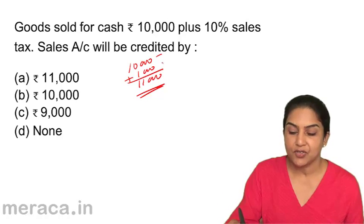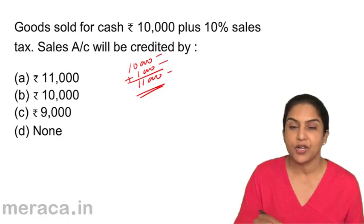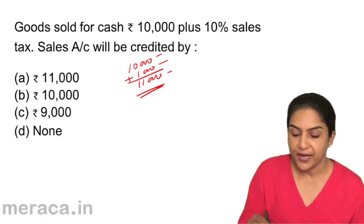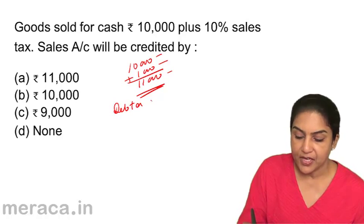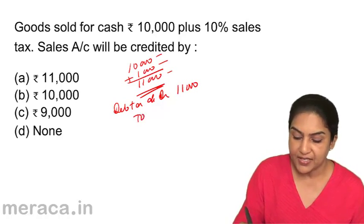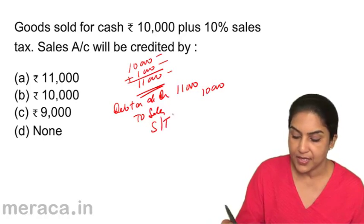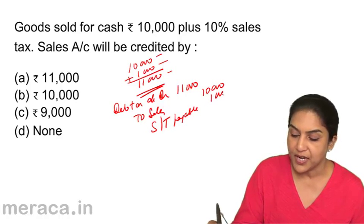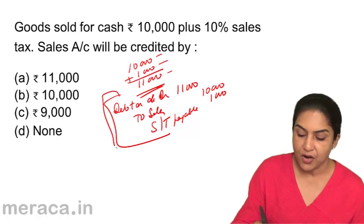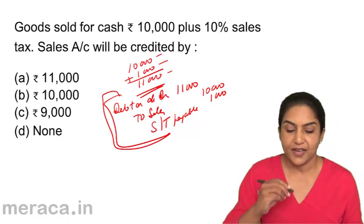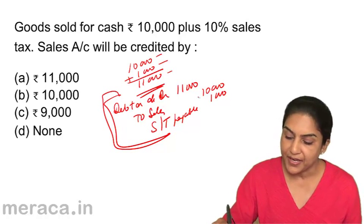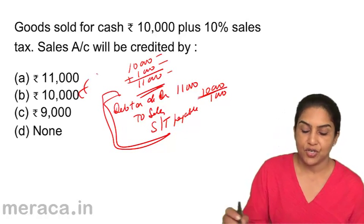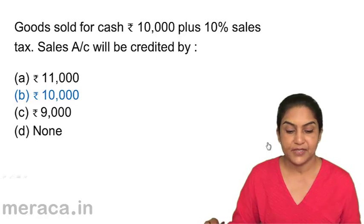Sales: 10,000, sales tax: 1,000, total: 11,000. Remember, the accounting entry — we would collect from the debtor 11,000, so debtor account would be debited for 11,000. But our sales is only 10,000. The remaining 1,000 is not a sale; it is actually sales tax payable by us, so that becomes a liability of 1,000. Therefore, sales account will be credited by 10,000. The correct answer should be b: 10,000.